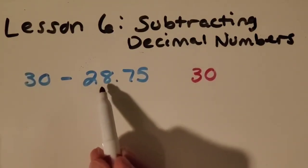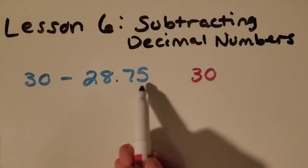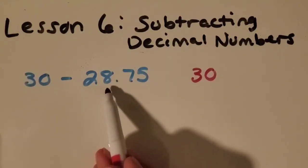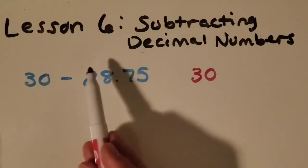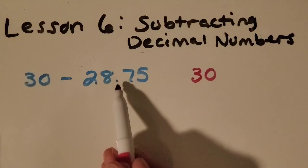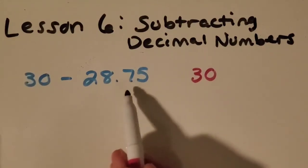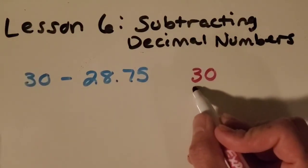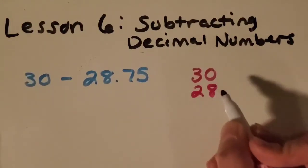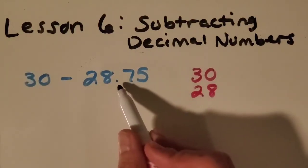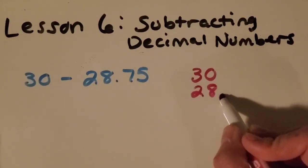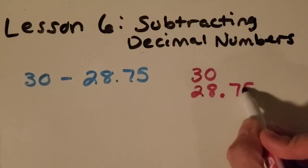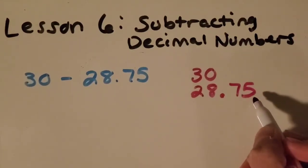I'm going to put 30 on top since I know that 30 is bigger than 28.75. Since you have a good understanding of place value, you know that this side of the decimal is the whole numbers and this side is the decimal places, the parts of a whole. So let's put the whole number underneath this other whole number. Then I can figure out what to do with my decimal places. I'm going to put 28.75.